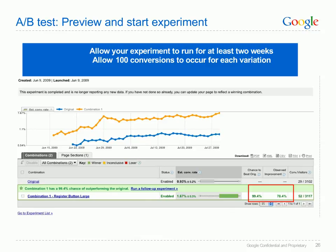Once your code is added to the site, you can start your experiment. Please wait at least two weeks before drawing conclusions on the experiment winner. In this example, you can see that combination 1 has a 99.4% chance of beating the original combination.